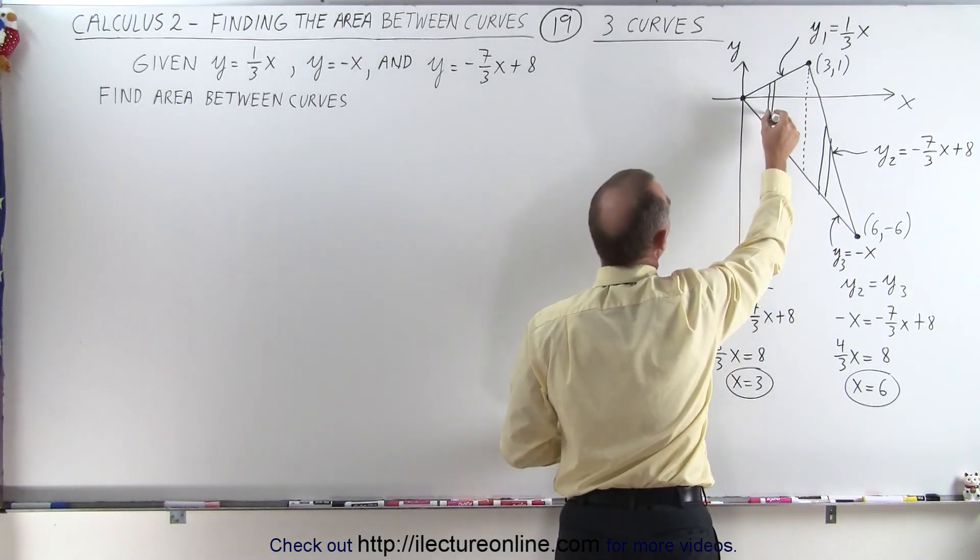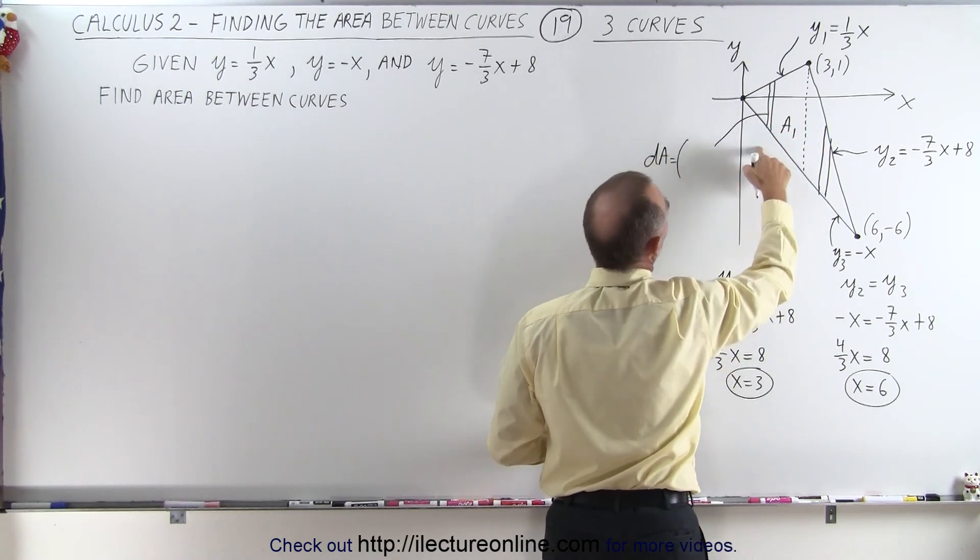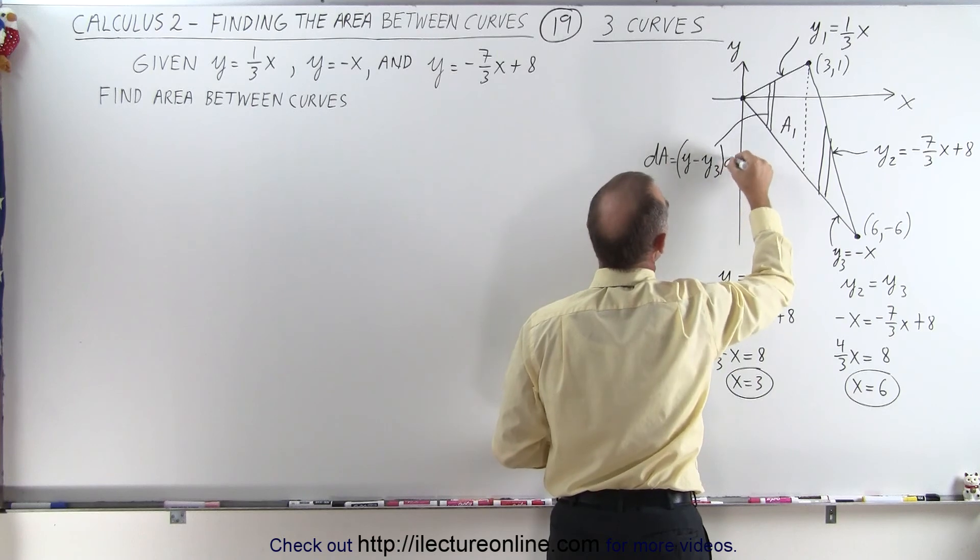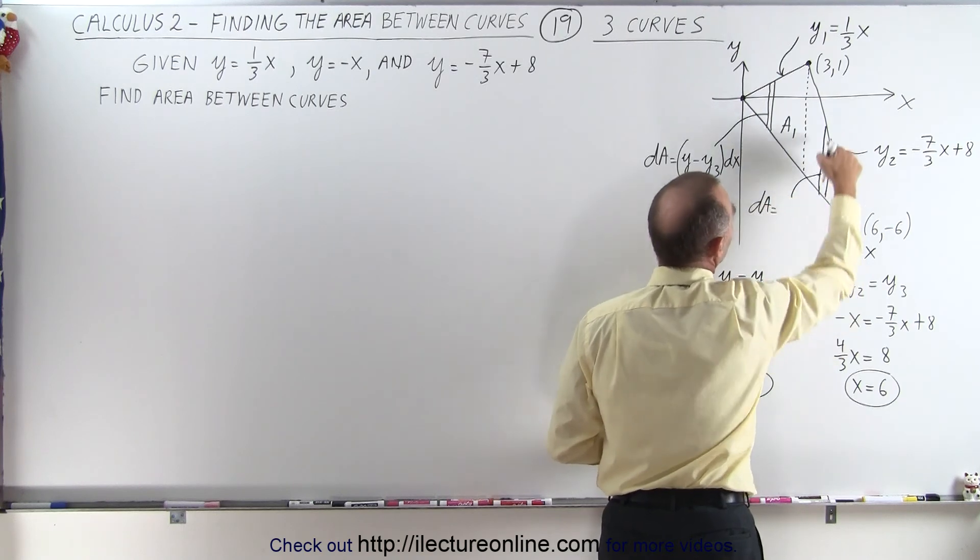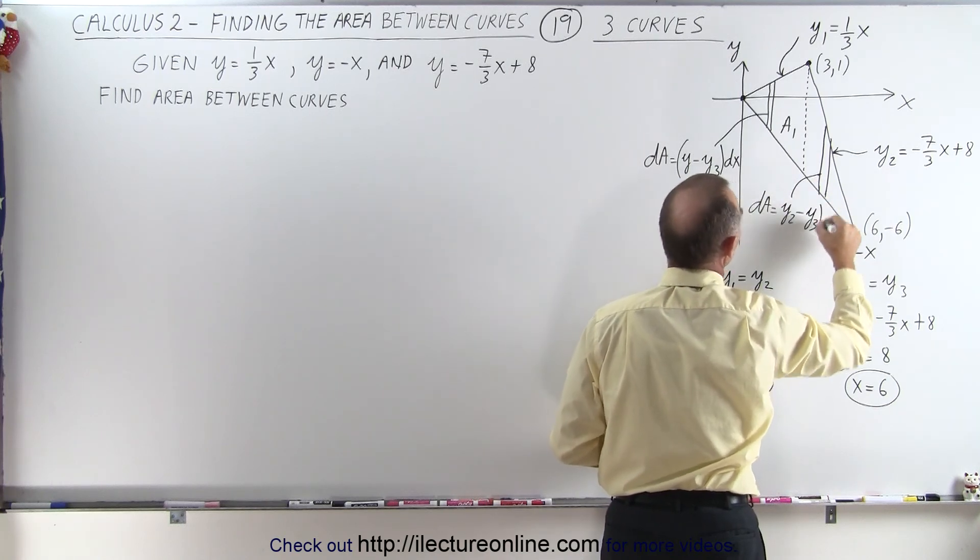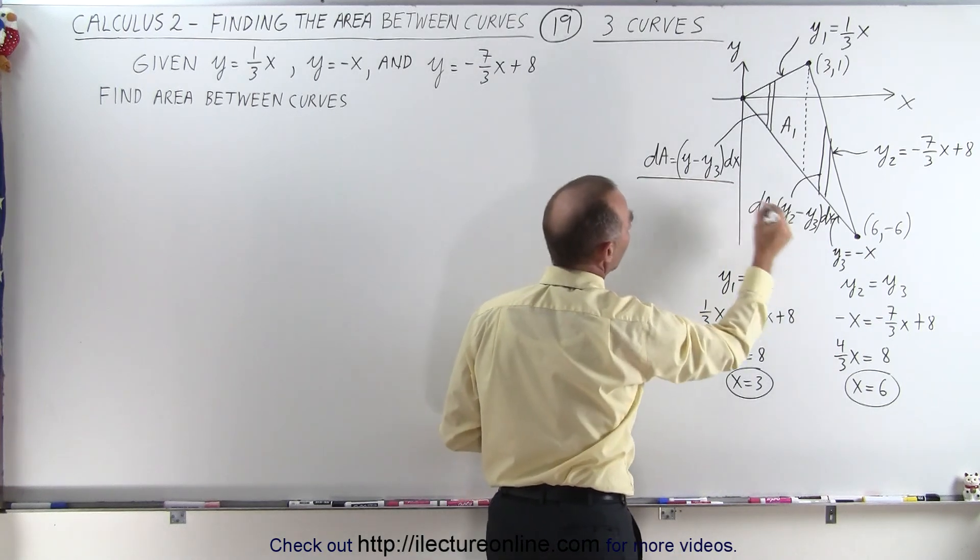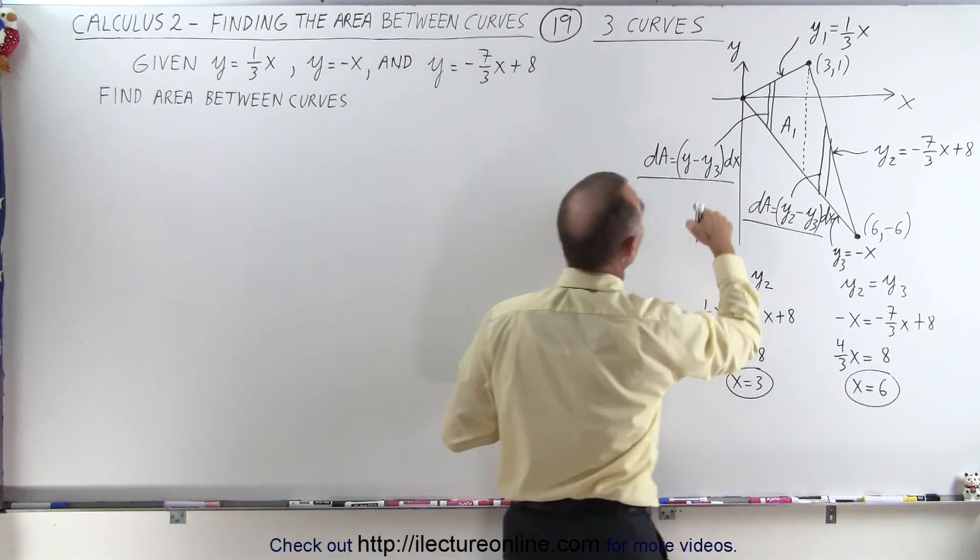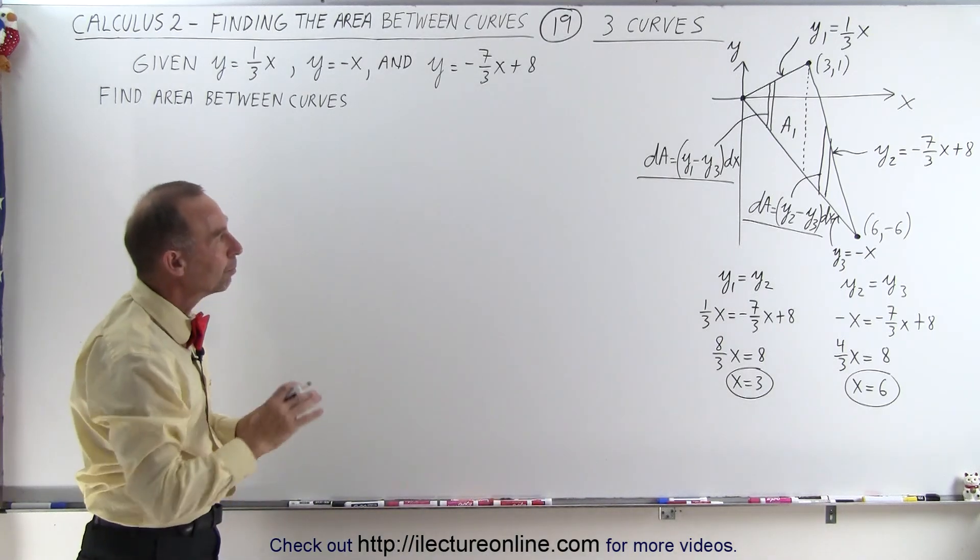Over here, when I draw a dA on the right side, notice that for the entire area here, the dA is defined by the upper line, which is y2, and the lower line, which is y3. So we have two dA's. This first dA here for area a1, dA is defined as being the upper y, which is y1, minus the lower y, which is y3, times dx. And here, this dA is defined by the upper line, which is y2, minus the lower line, which is y3, times dx.